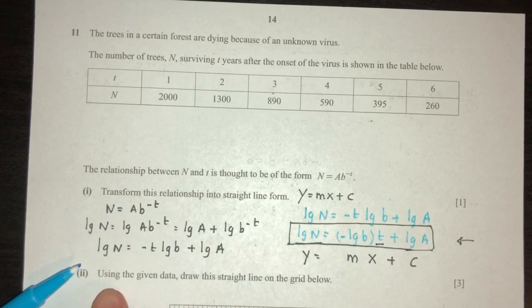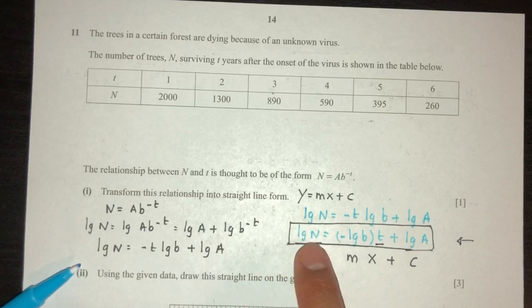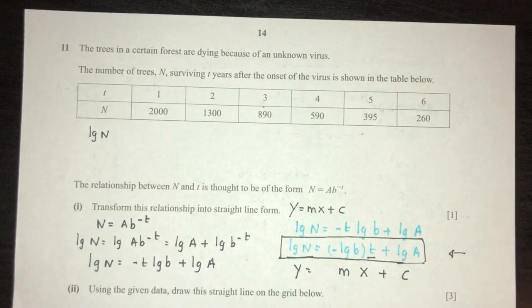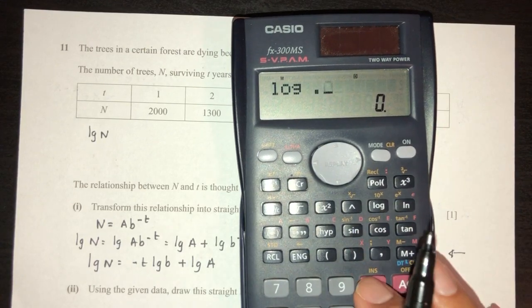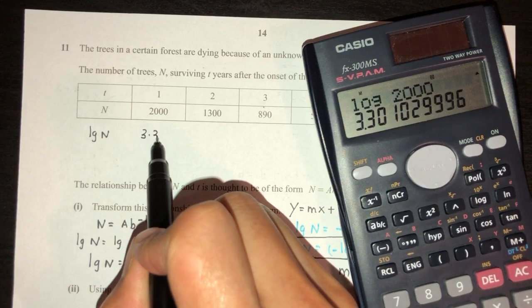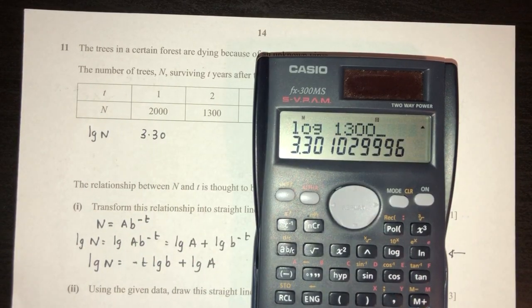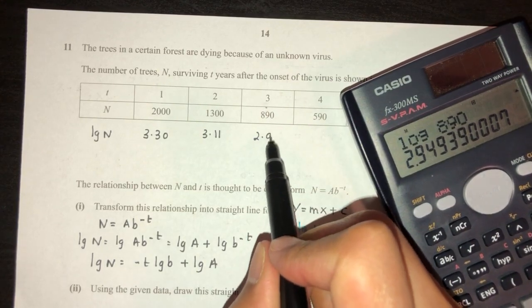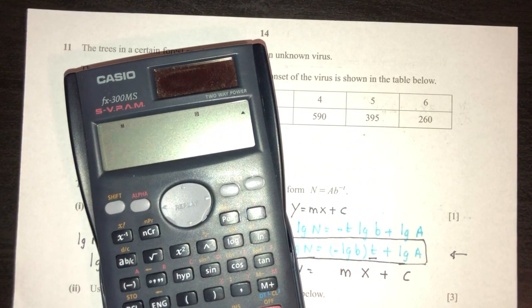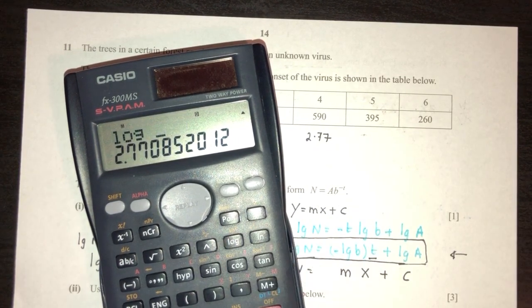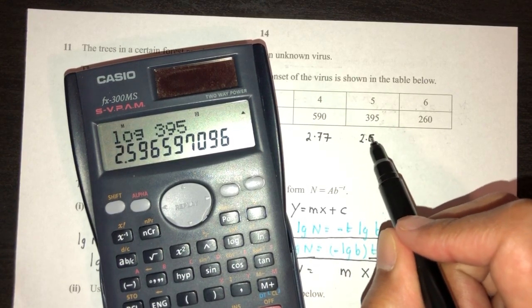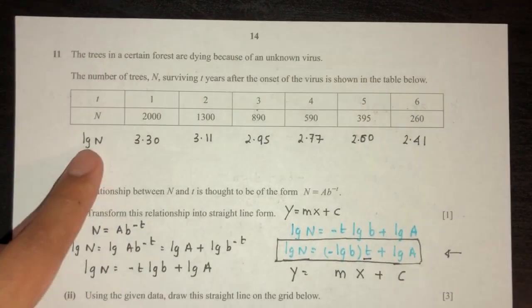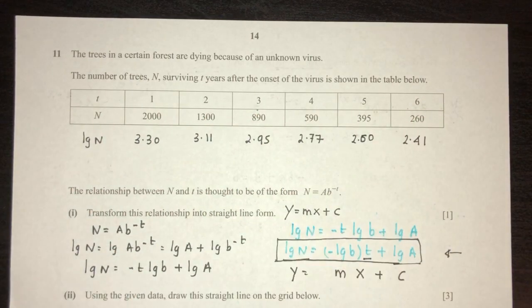Calculate log N for each data point: log 2000 ≈ 3.30, log 1300 ≈ 3.11, log 890 ≈ 2.95, log 590 ≈ 2.77, log 395 ≈ 2.60, log 260 ≈ 2.41. t values are 1 through 6. Now we can plot the graph with t on the x-axis and log N on the y-axis.